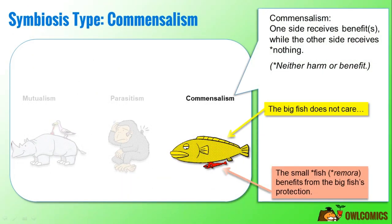The last type of symbiosis we're going to cover is commensalism. Commensalism is a very special one, because while one side receives benefits, the other side receives nothing — neither harm nor benefit; it's just not affected at all. In our example, we see a small fish — a red mora fish — attaching itself to a bigger fish. It's not hurting the bigger fish; it's just hitching a free ride, and the big fish doesn't care.